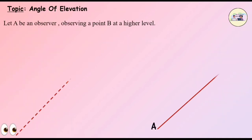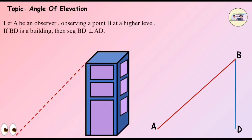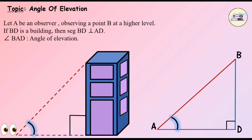Angle of Elevation: Let A be an observer observing point B at a higher level. If BD is a building, then segment BD is perpendicular to AD. Here, angle BAD is called the angle of elevation.